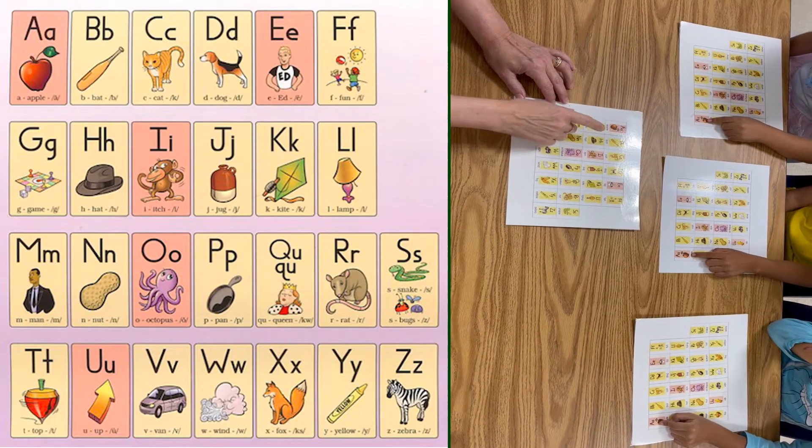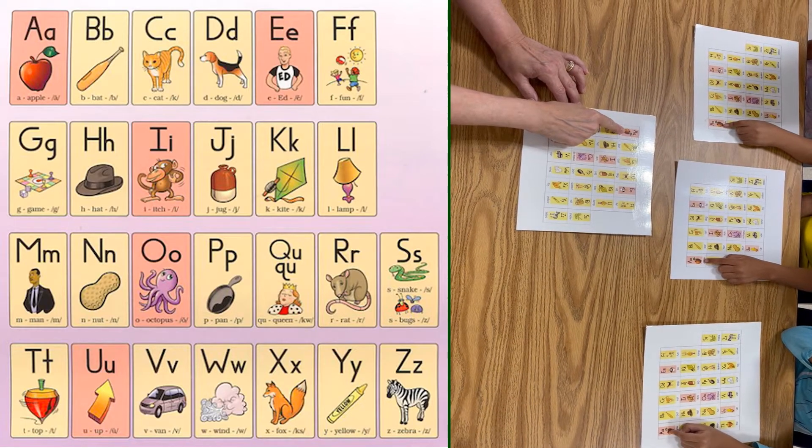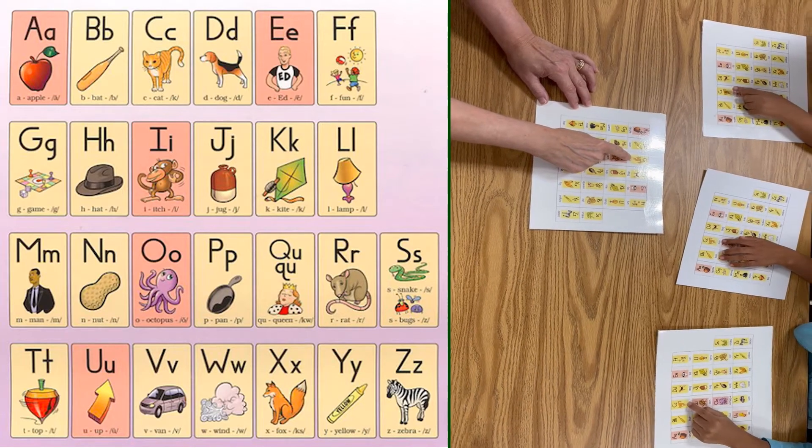All right, we're going to do our foundations chart now. Ready? A, apple, a. B, bat, b. C, cat, c.